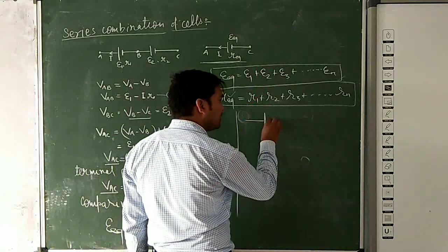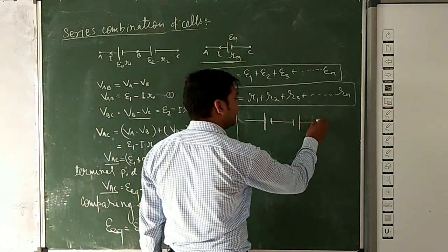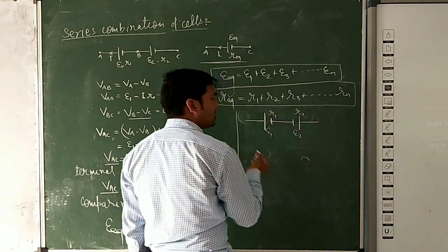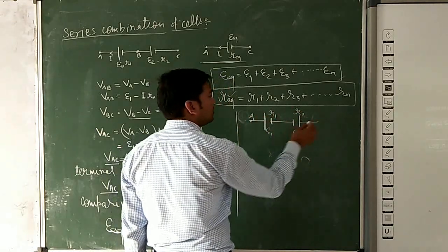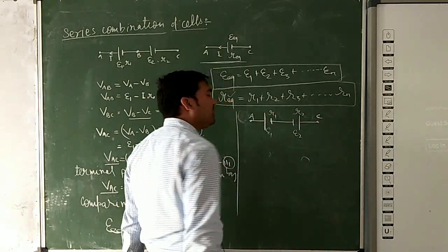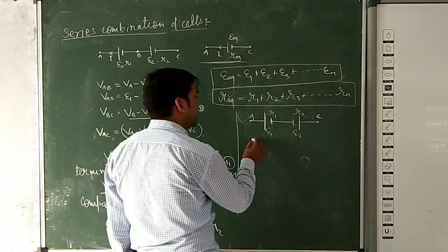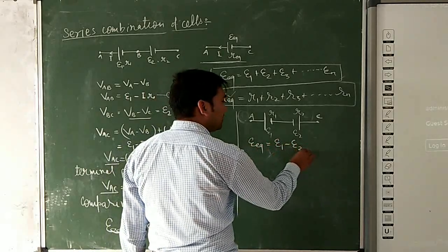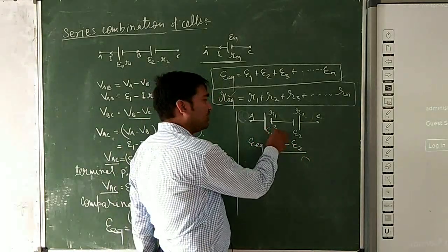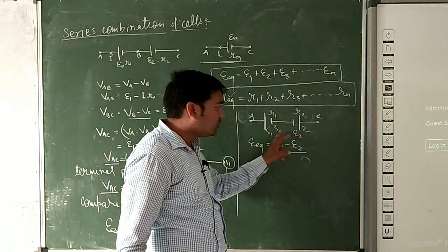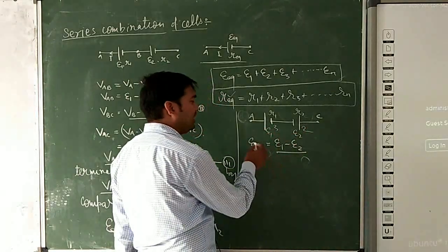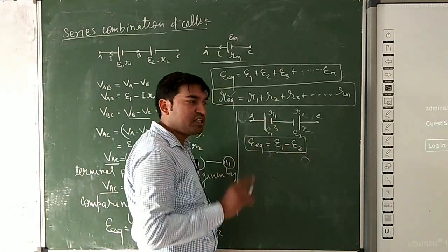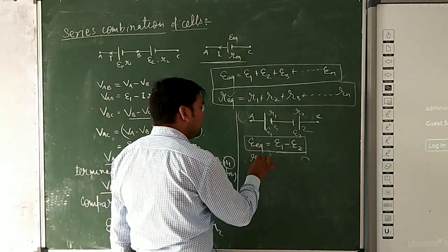But if we connect negative terminals together — for example, E1 with internal resistance R1 and E2 with internal resistance R2, with both negative terminals connected — then the equivalent EMF becomes E1 minus E2. A 3-volt and 2-volt battery connected this way give a 1-volt resultant. The resistances still add.